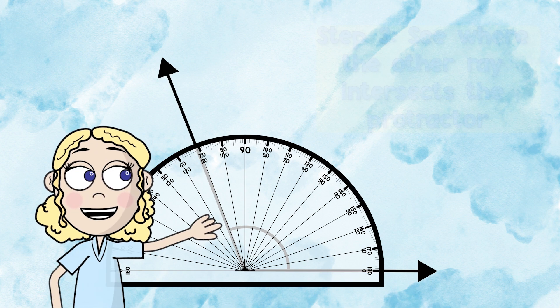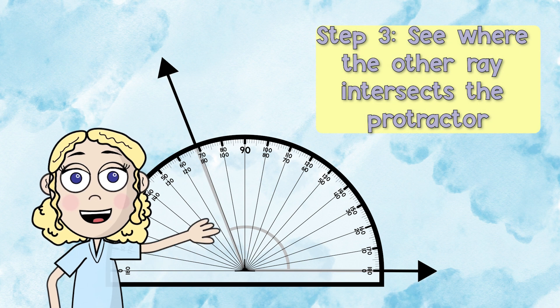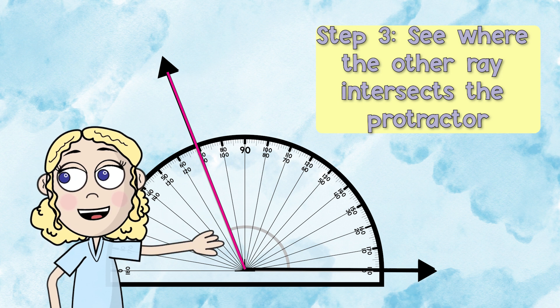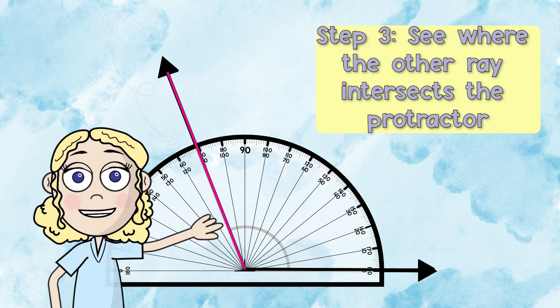Step three, you will see where the other ray intersects the protractor, and that is where you will find your angle measurement. That's how you measure. Hooray!